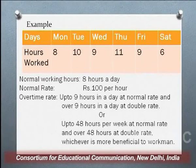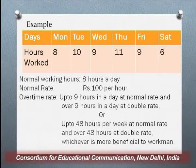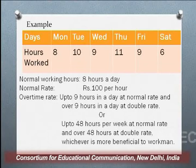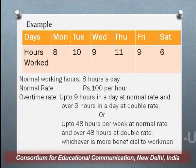How do you calculate wages for overtime? Presuming here that a worker works for 8 hours on Monday, 10 hours on Tuesday, 9 hours on Wednesday, 11 hours on Thursday, 9 hours on Friday, and 6 hours on Saturday. As stated, if a person works beyond 9 hours in a day, or beyond 48 hours in a week, the worker is entitled for overtime. The normal working hours are 8 hours a day and the normal rate is 100 rupees per hour.